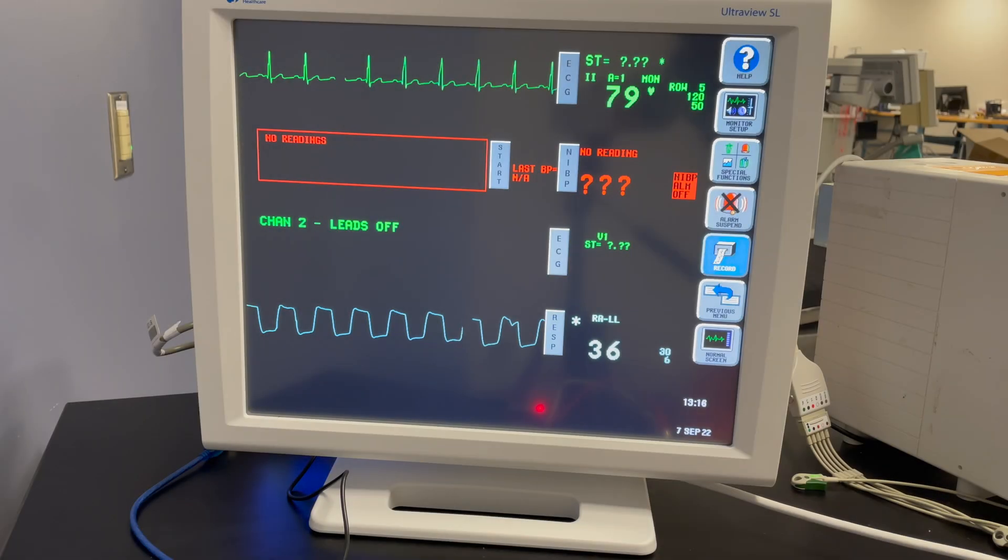What you see here is we have a stable ECG at around 80 beats per minute, but our high rate alarm on our respiratory rate is going off.